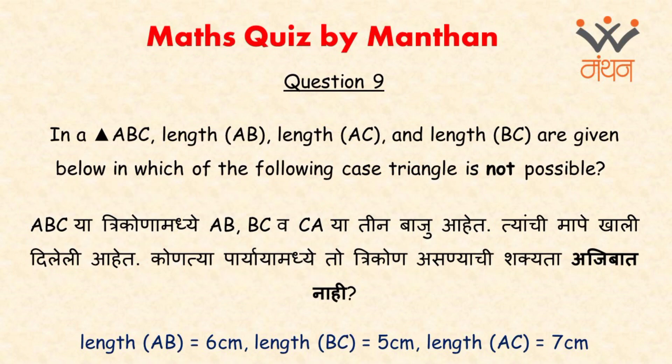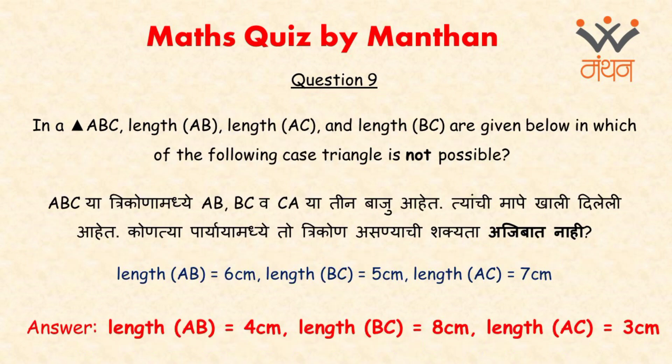Question number 9 also asks us to use the same skill of elimination, but that won't be enough. You must also be aware of the concept of triangles as well as their properties. The combination which cannot form a triangle is: length AB equal to 4 cm, length BC equal to 8 cm, and length AC equal to 3 cm.